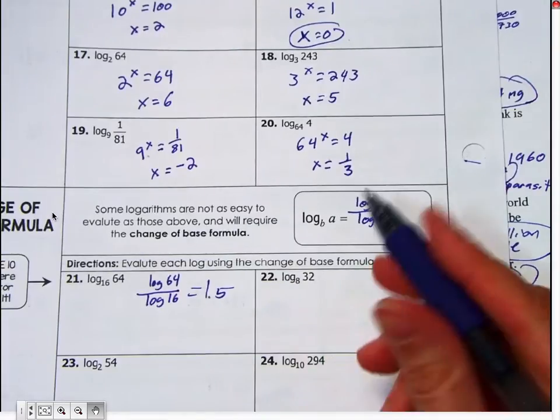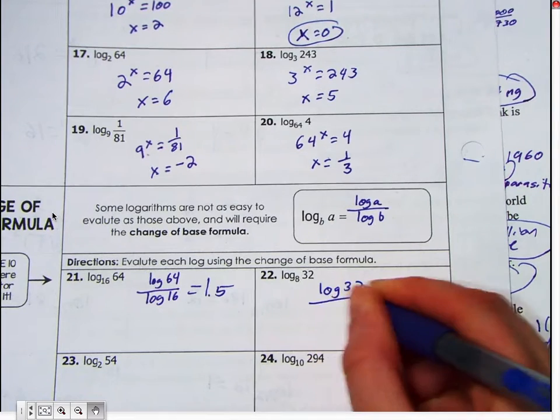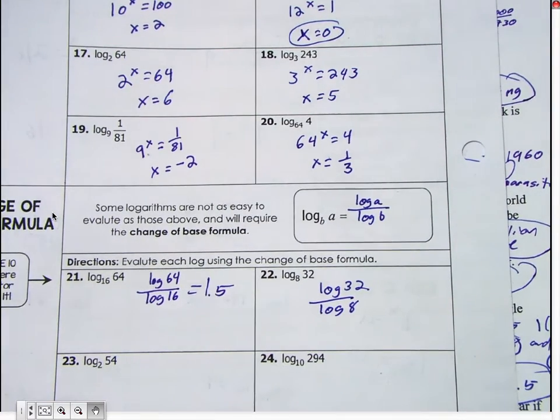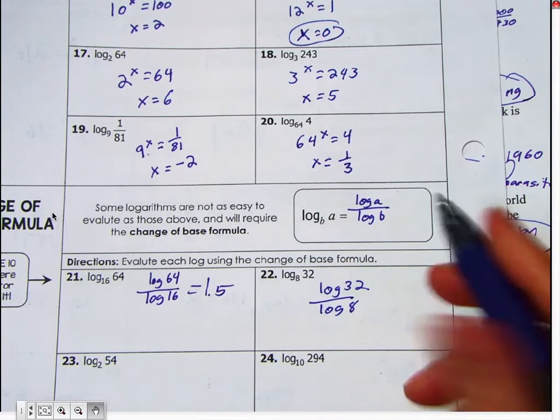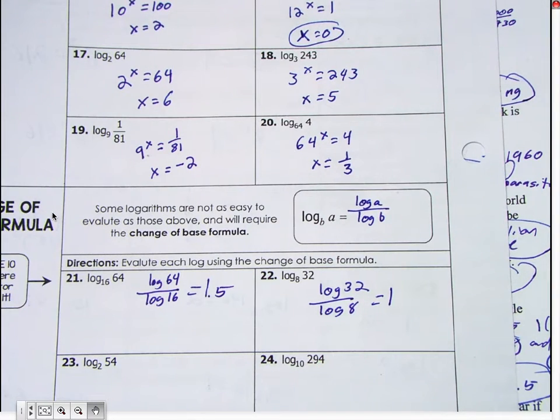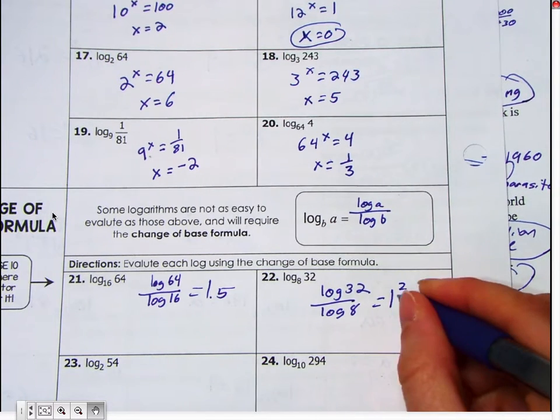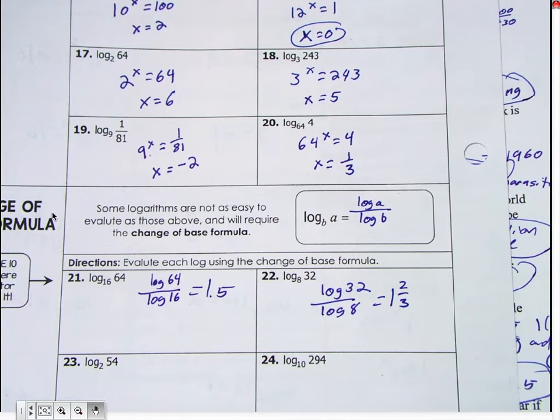Okay. I'm going to do one more like that. So how would I set up 22 guys? Log of 32 over, so I just put that in my calculator. Log base 10 of 32 divided by log base 10 of 2. And I get 1 and you guys know what .66667 is, right? What fraction is it? Two thirds. Four thirds.